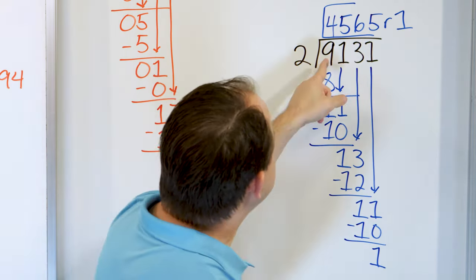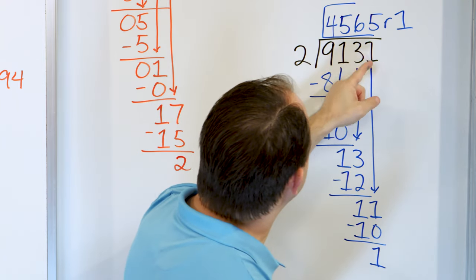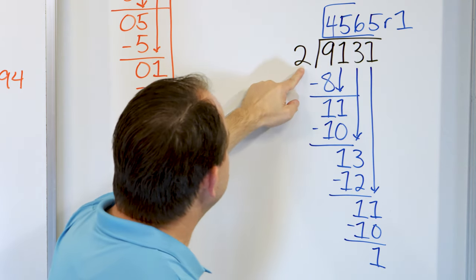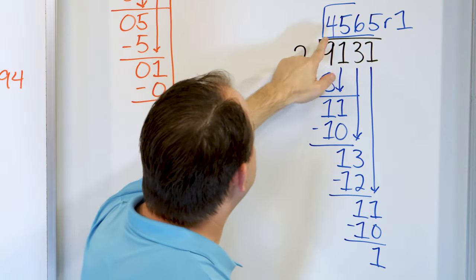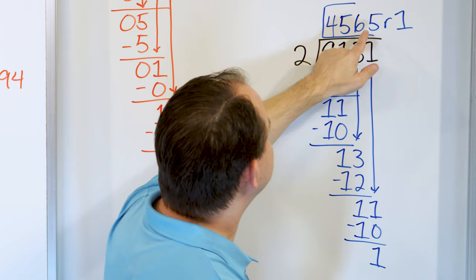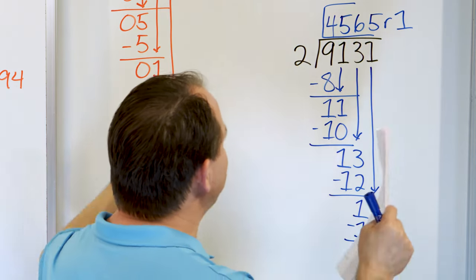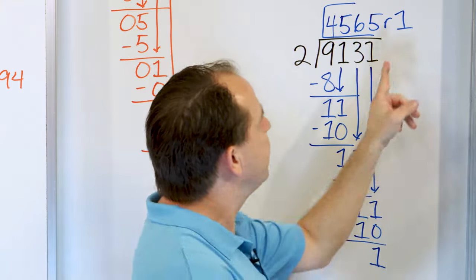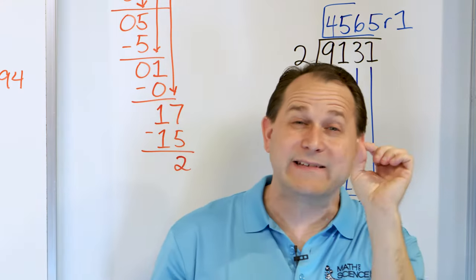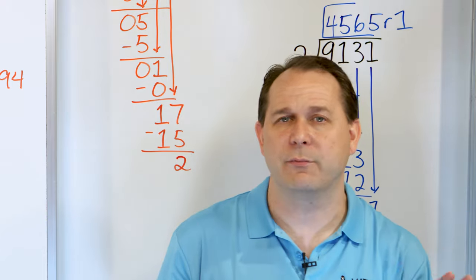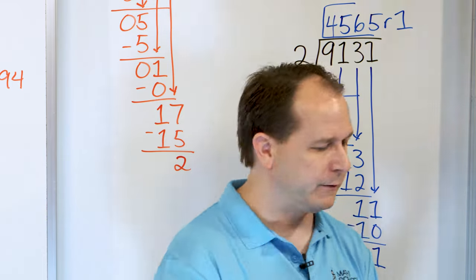So if I had 9,131 grains of sand and tried to put them in two equal piles, I'd have 4,565 grains of sand in each pile, but then I'd have one grain of sand left over that I can't evenly distribute — so it's a remainder.